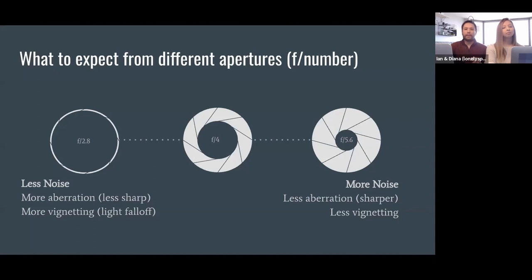Different aperture numbers, different f-numbers of your lens, change the amount of light that your lens gathers. So if we're shooting at f2.8, that means that we have a much larger aperture and it allows our lens to gather more light.